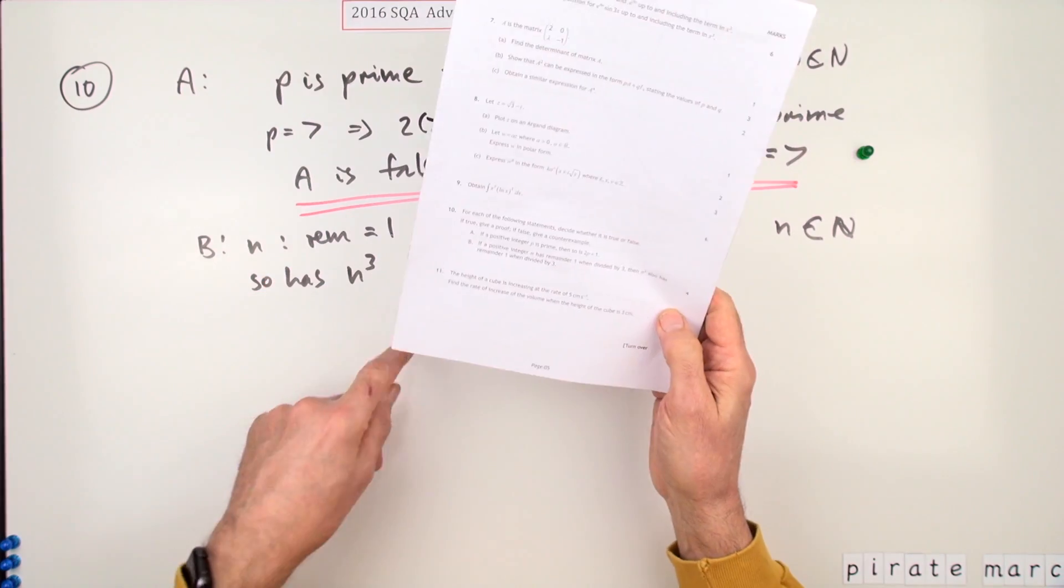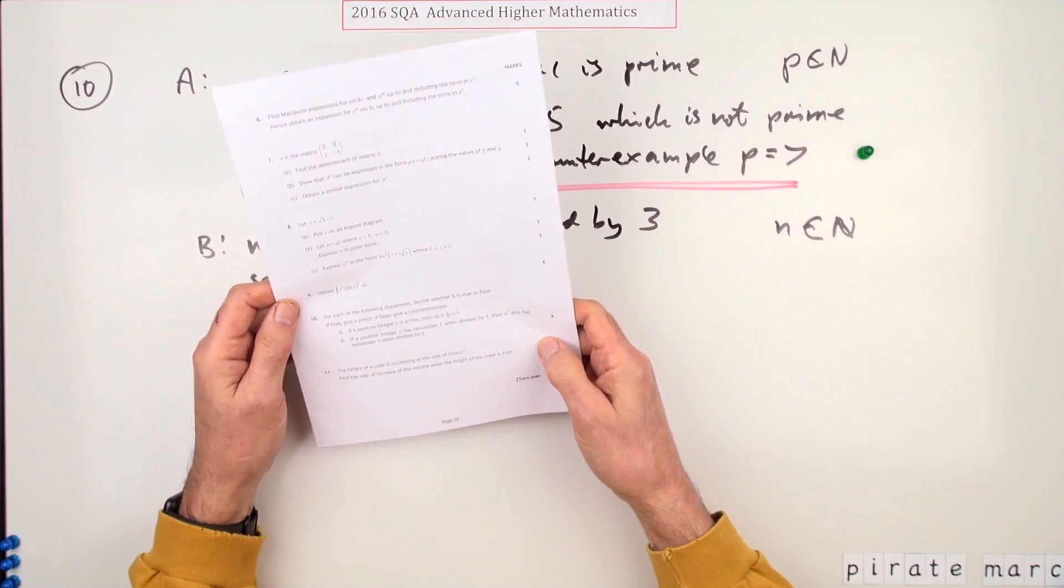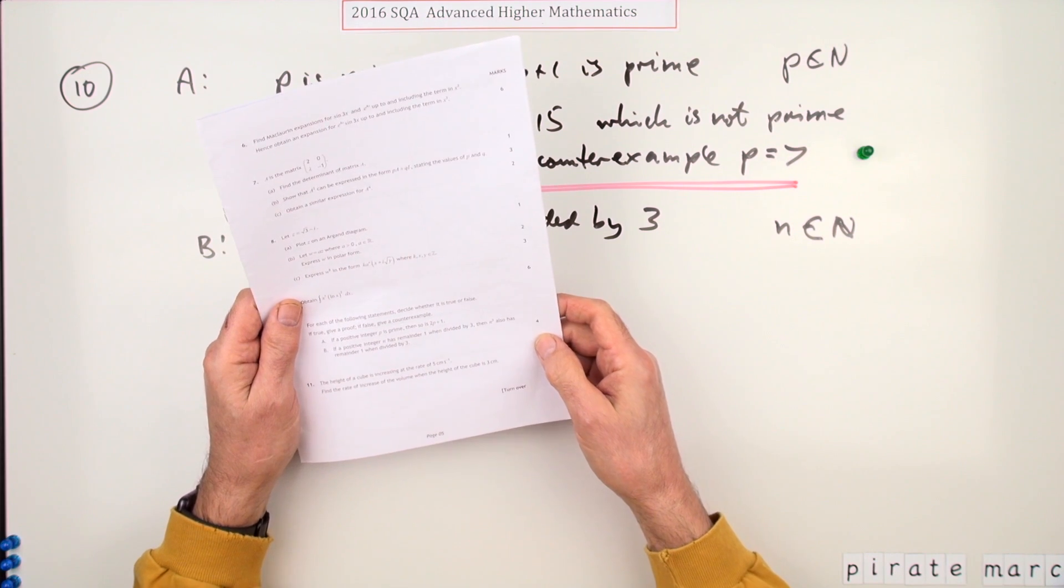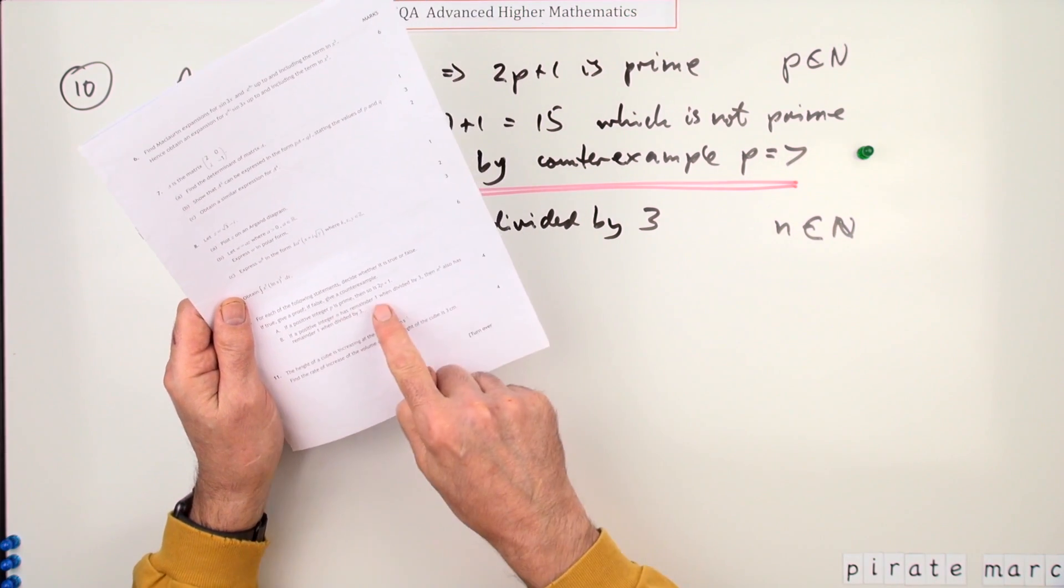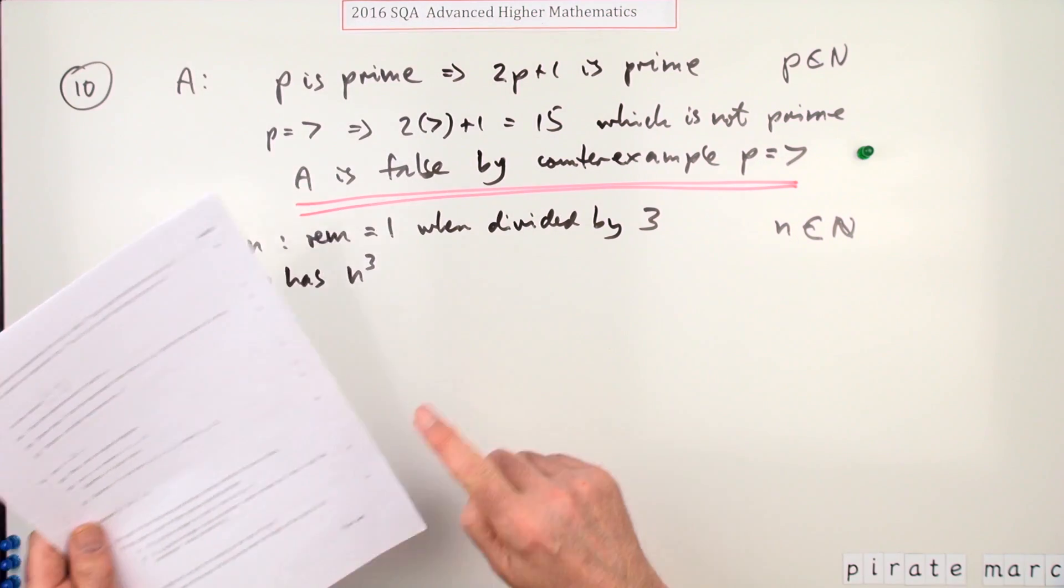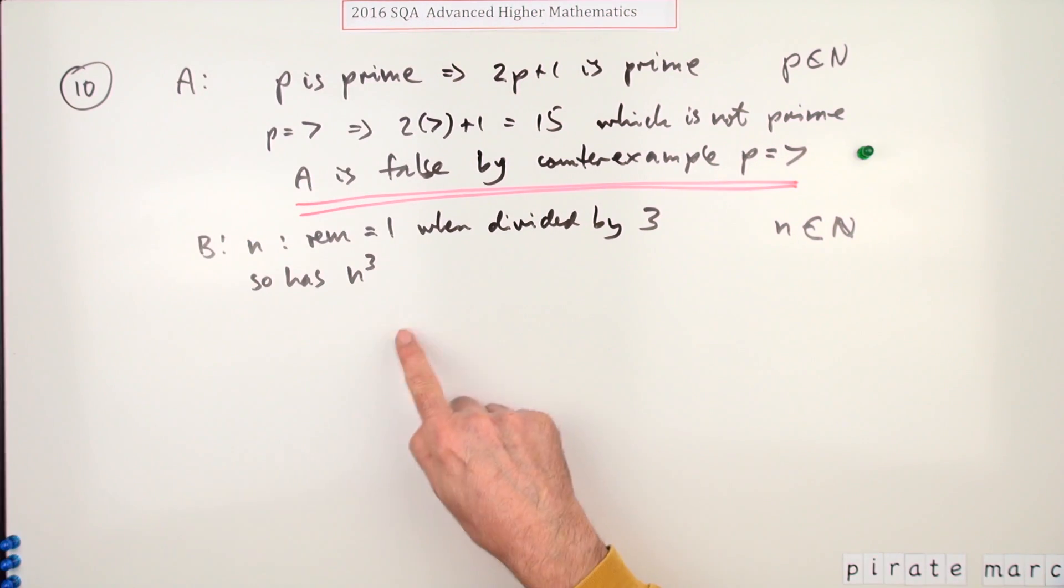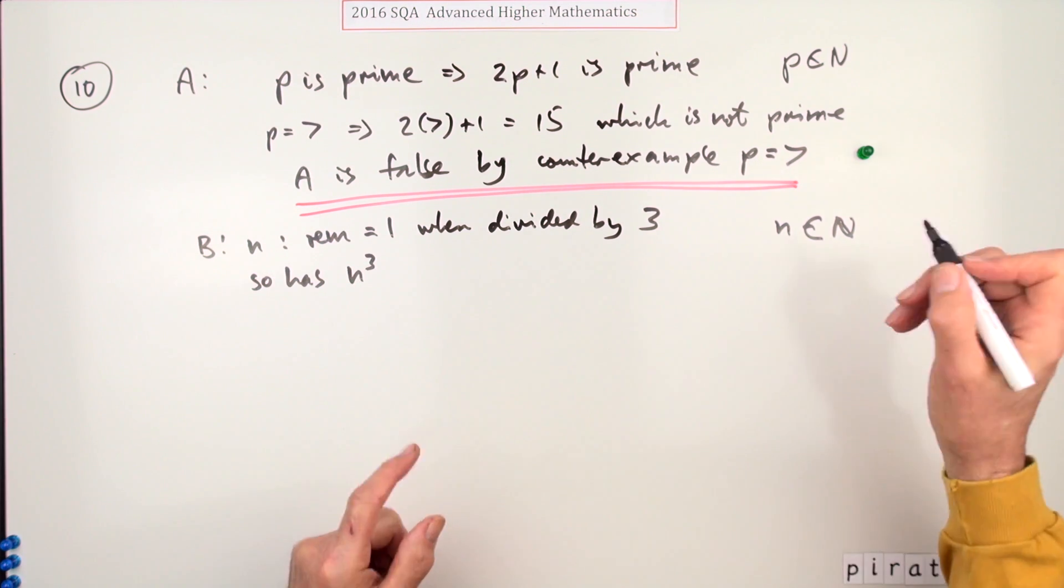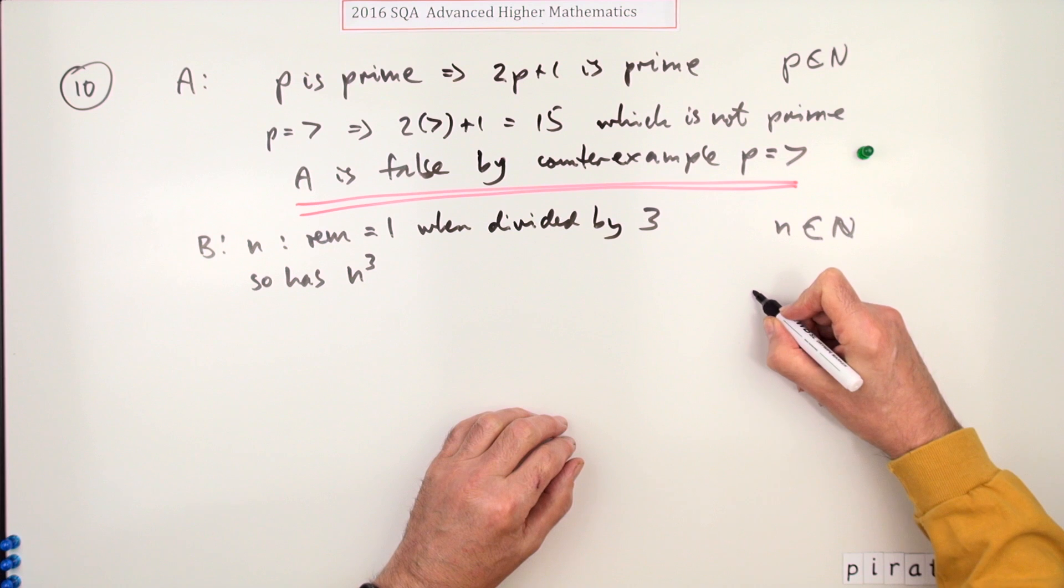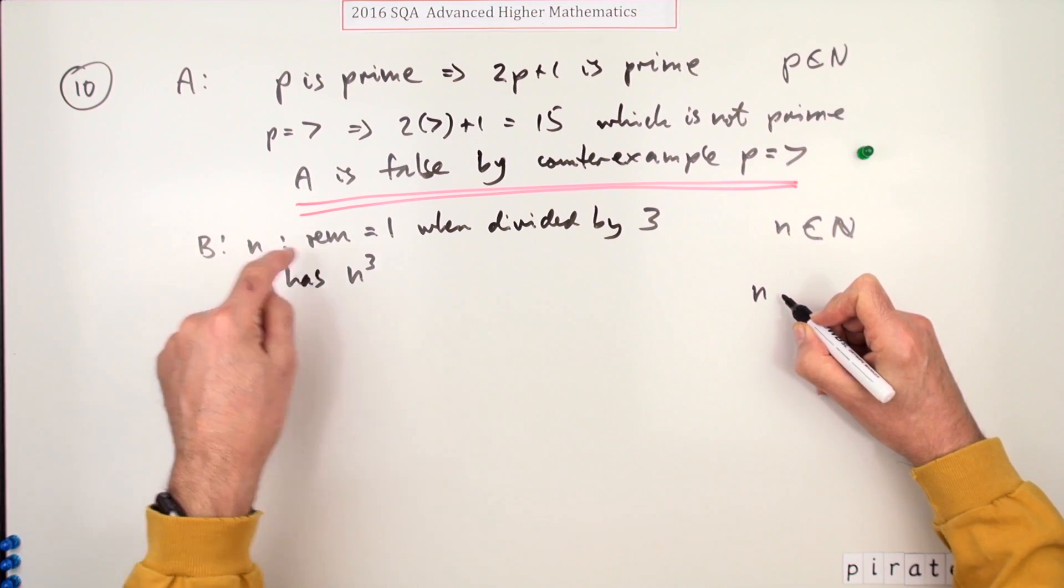Part B, so this must be the one that's worth three marks, then so that must be the proof. If n is a positive integer - well that seems a natural number - and has a remainder of one when divided by three, then so has n cubed a remainder of one when divided by three. Now there is a way of stating that using a congruence thing which is written this way.